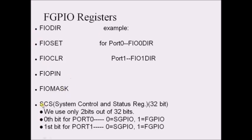Coming to the system control block — how we differentiate between fast GPIOs and slow GPIOs is based on the system control status register. Using this register's SCS bit 0, we configure the entire GPIO block as fast GPIO. SCS bit 0 will make port 0 fast GPIO, and the fast bit will reflect port 1. If you make 0 in SCS bit 0, it works as slow GPIO; if you make 1, it works as fast GPIO.